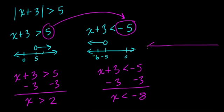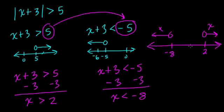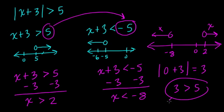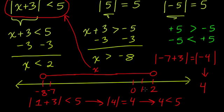Looking at the number line, x is greater than 2 — everything to the right of 2 — or x is less than negative 8 — everything to the left. x just can't be anything in between. You can test that: plugging 0 into the original equation gives the absolute value of 0 plus 3, which equals 3, and 3 is not bigger than 5, so x equals 0 doesn't work. Any number less than negative 8 or greater than 2 will work. This happened because our absolute value was greater than 5, whereas when it was less than 5, we got a single enclosed interval. Those are some things to think about when graphing absolute value inequalities.